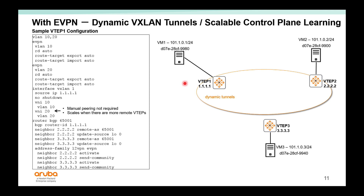With EVPN, it provides dynamic VXLAN tunnels and a scalable control plane. You still need to enable the global VLANs, and you need to enable EVPN mapped to those VLANs. Route Distinguisher and Route Target can be left as Auto. For the interface VXLAN, specify a source IP (the loopback), bring it up. Manual VNI-to-VLAN mapping is still required, but there is no need to specify all remote peers — those are learned through the MP-BGP EVPN address family. This makes it more scalable and reduces the chance of human CLI error.